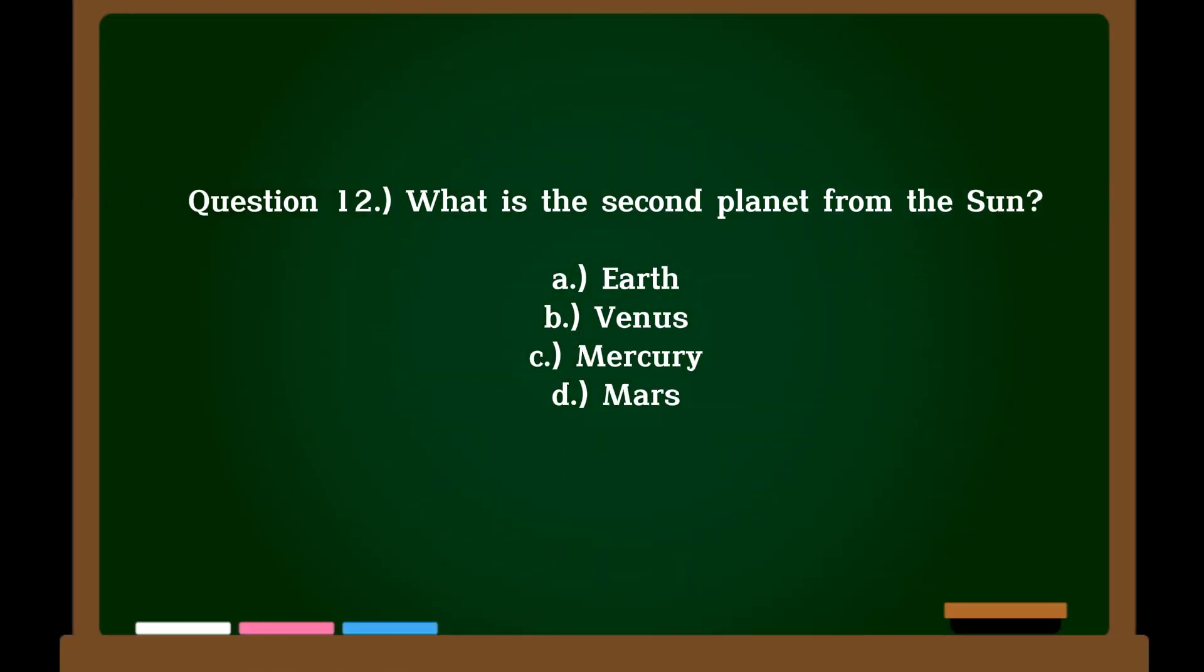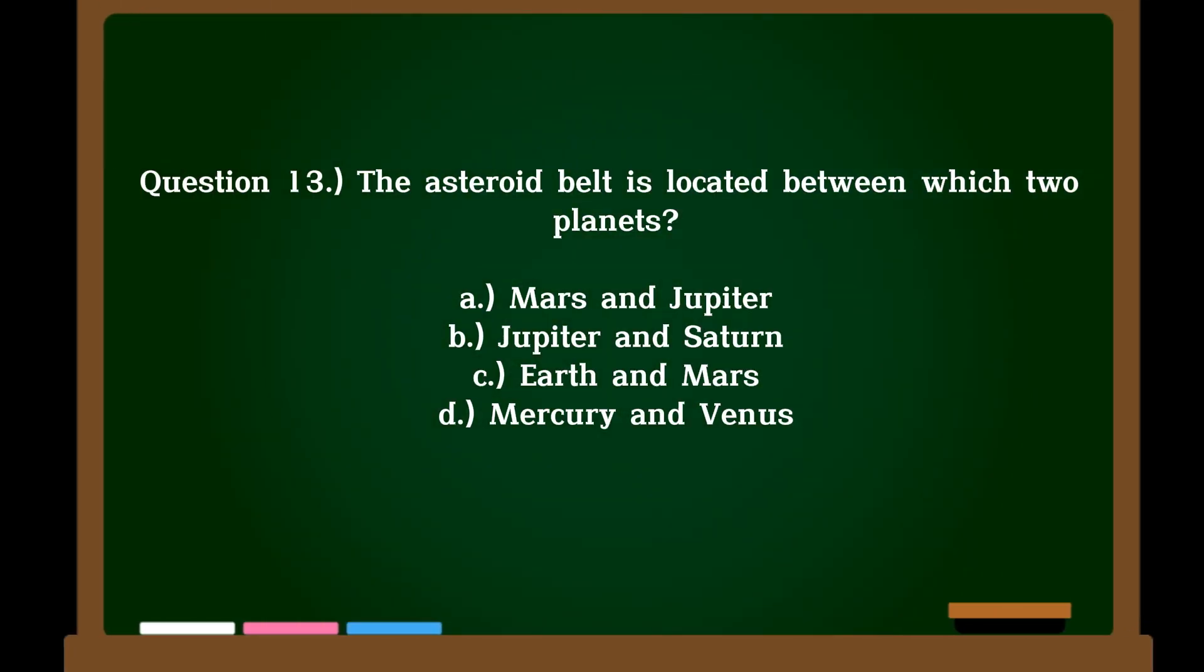Question 12. What is the second planet from the sun? A. Earth, B. Venus, C. Mercury, D. Mars. Correct answer: B. Venus.